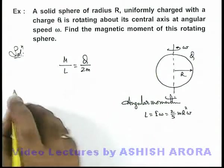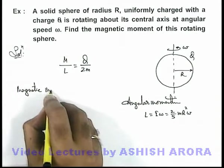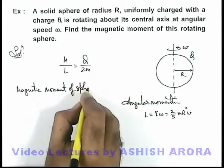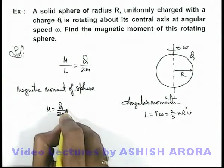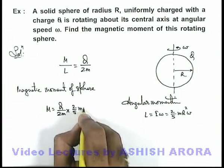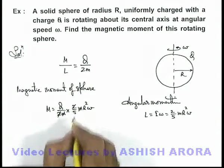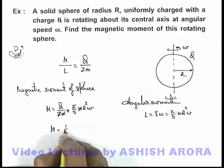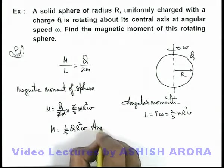So we substitute the value of L. Here we directly get the value of magnetic moment of sphere which can be given as m is equal to Q by 2m multiplied by the angular momentum which is 2 by 5 m R square omega. Here this 2m gets cancelled out and the magnetic moment we are getting is 1 by 5 Q R square omega. That will be the answer to this problem.